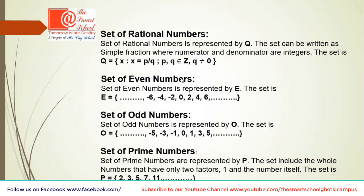Now, set of even numbers, set of odd numbers. These are very simple. Yes, exactly. All those numbers which are divisible by 2 are called even numbers and which are not divisible by 2 are called odd numbers. Yes, exactly correct. And even numbers we represent by E and odd numbers we represent by O.